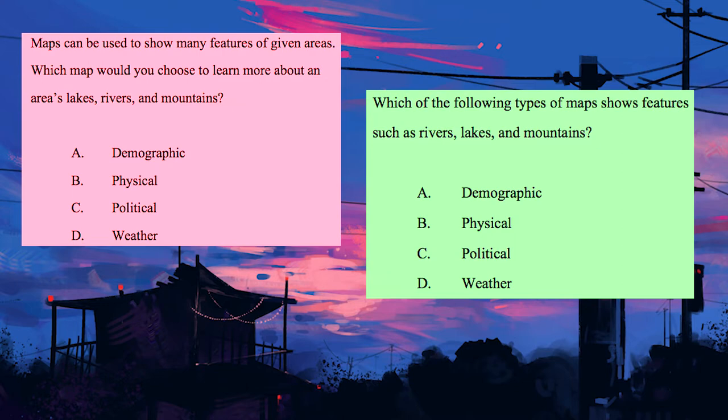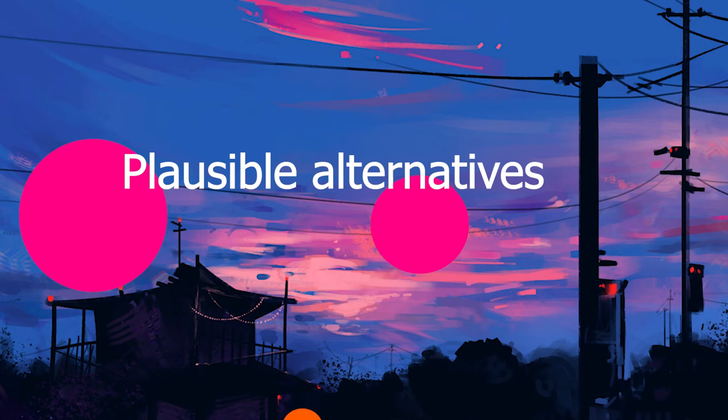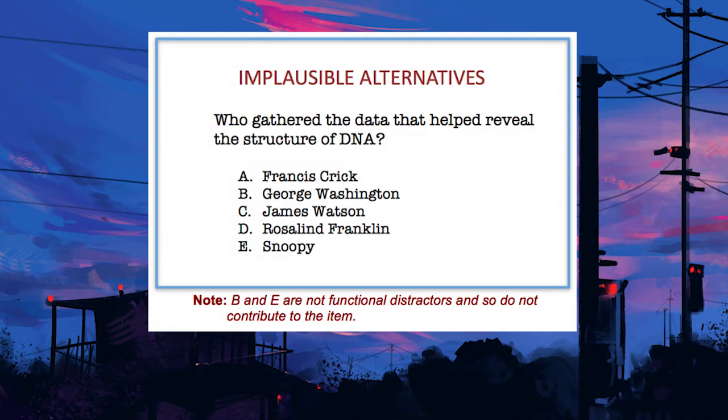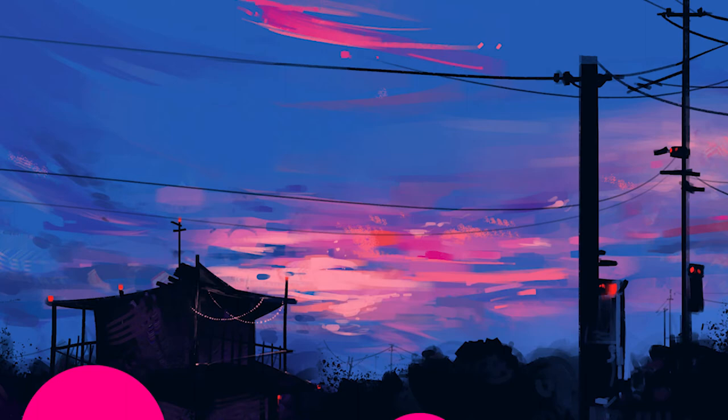How do you make alternatives more effective? All alternatives should be plausible. The function of the incorrect alternative is to serve as distractors. Common student errors provide the best source of distractors. Alternatives should be homogeneous in content, as heterogeneous content can provide clues to students about the correct answers.